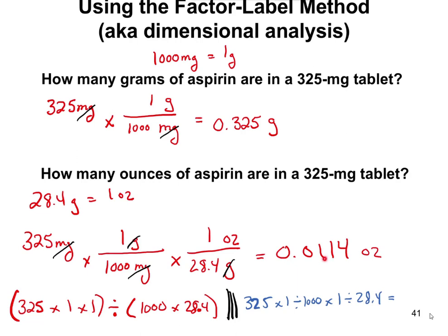For multiplication and division, significant figures are determined by whichever starting number has the fewest significant figures. Direct conversions pulled from a chart don't count toward that. Our initial number 325 has 3 significant figures, and 28.4 also has 3. The conversion factor of 1,000 milligrams per gram doesn't really need the 1 written explicitly. So the final answer is 0.0114 ounces.